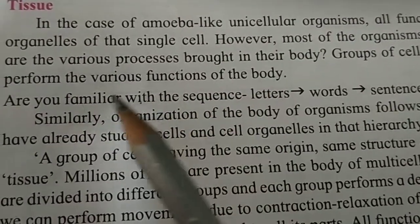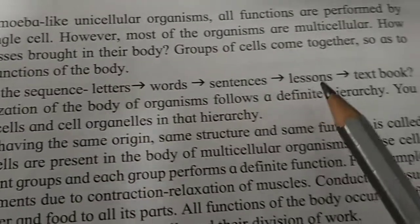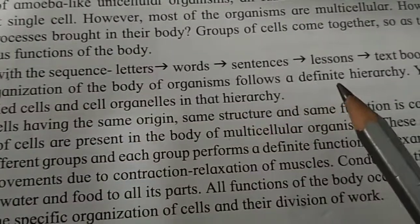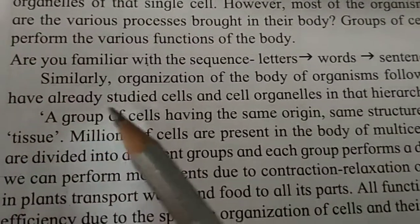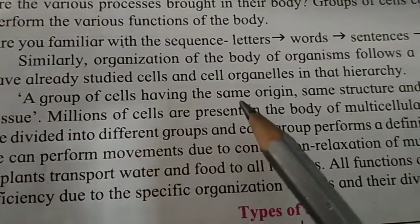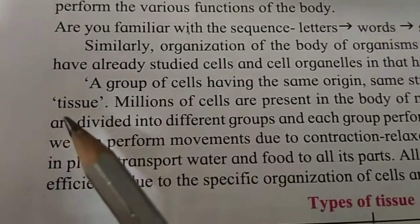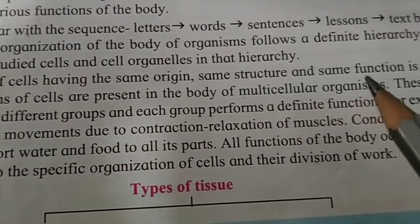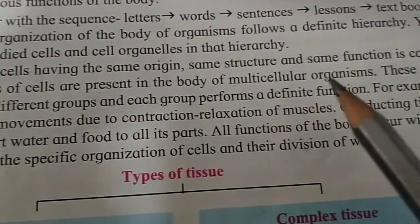Just as you are familiar with the sequence: letters, words, sentences, lessons, textbooks — similarly, the organization of a body follows a definite hierarchy. A group of cells having the same origin, same structure, and same function is called tissue. Millions of cells are present in the body of a multicellular organism.